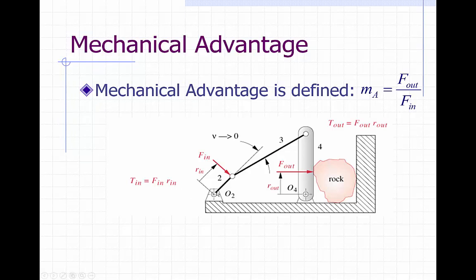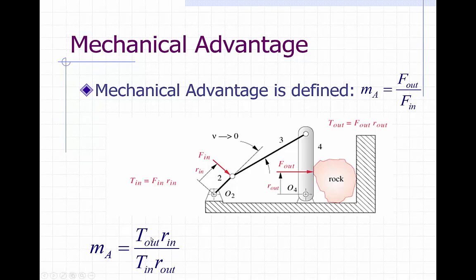Since we're dealing with rotational components — a rotating crank and a rotating rocker — it would be helpful to replace force out and force in with torque out and torque in. The force input is equal to torque input divided by r_in, the distance from the ground joint to our input force. And force out equals torque out divided by r_out, where r_out is the distance from the O4 position to our output force. So our mechanical advantage now includes torques instead of forces, which is better because this is a rotational set of links.